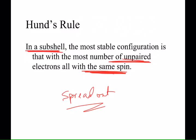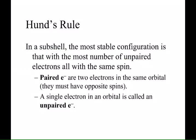A little bit more about Hund's rule. Paired electrons means that you have 2 electrons with opposite spins in the same orbital. Unpaired electron means that you have 1 electron in a box, 1 electron in an orbital by itself.